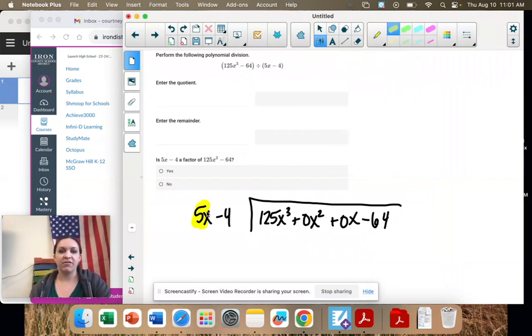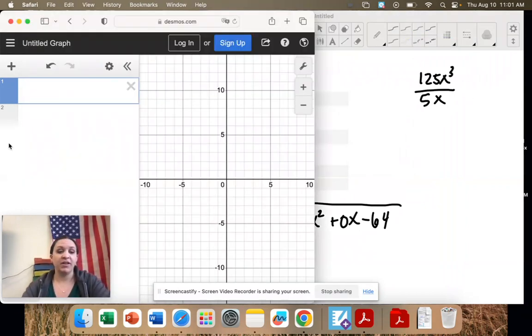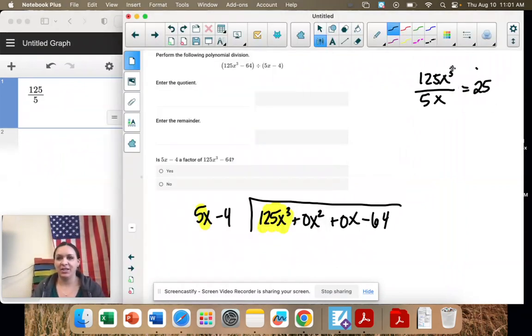So focus on 5x and 125x³. What do we need to multiply by? Well, maybe we should start with 125 divided by 5. So we need to multiply by 25, and then we have 3x's, or we have 1 and we need 3. So it's going to be 25x² when we multiply to get that 125x³. And then 25 times negative 4 is negative 100, and we have x².